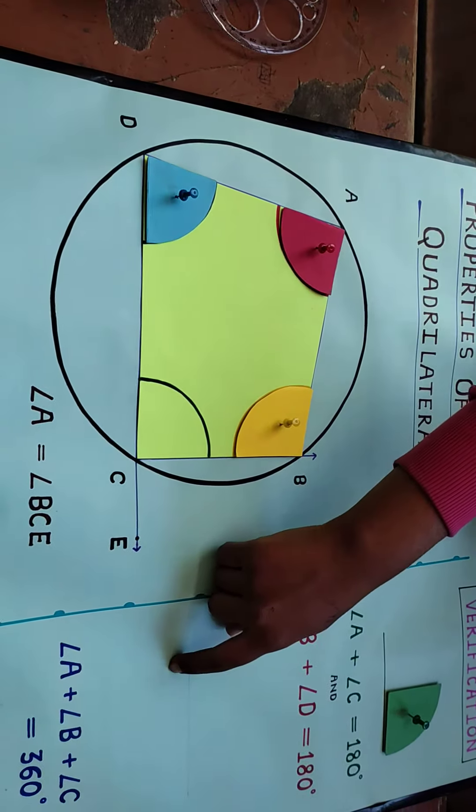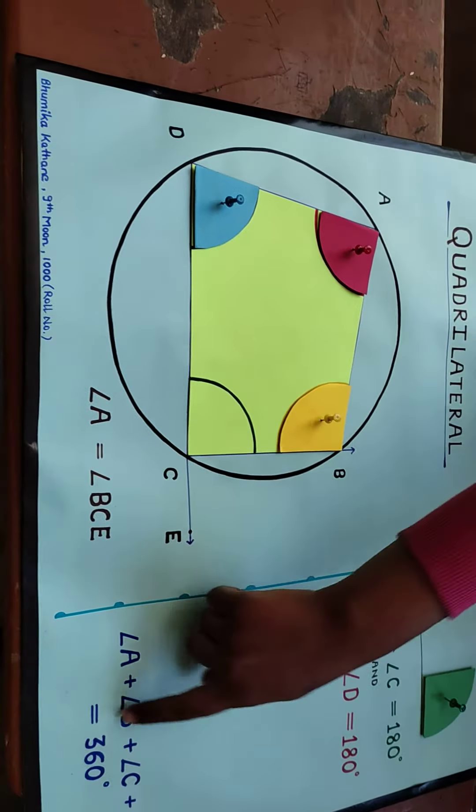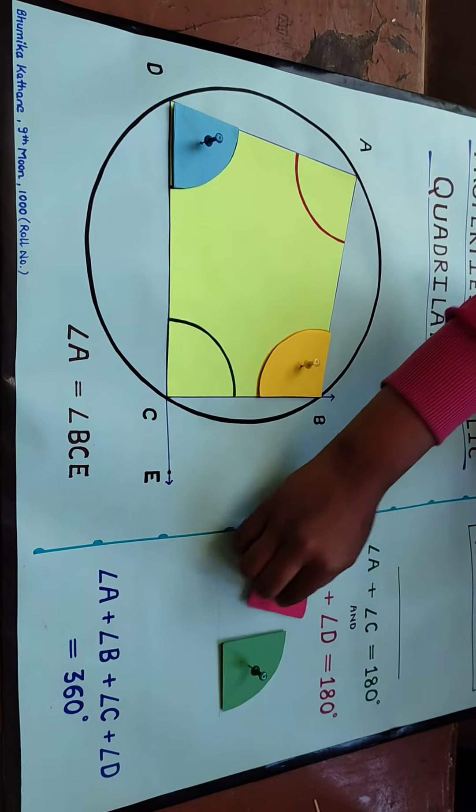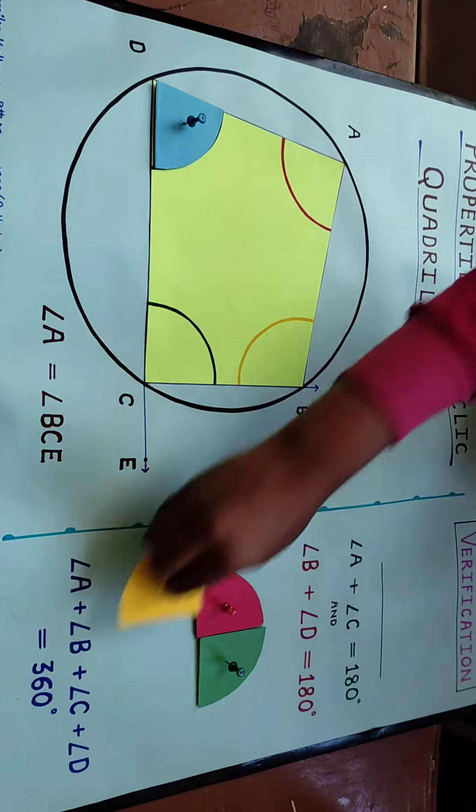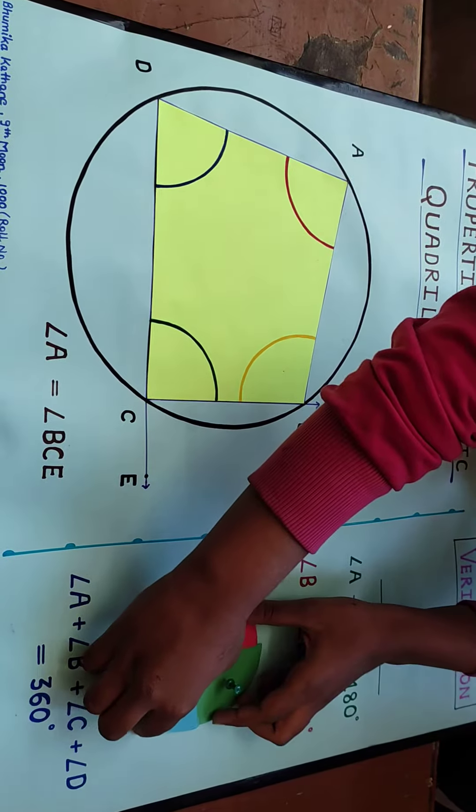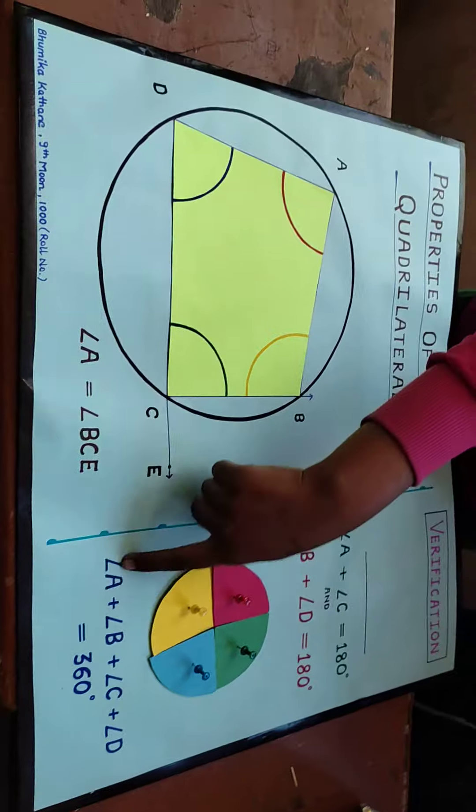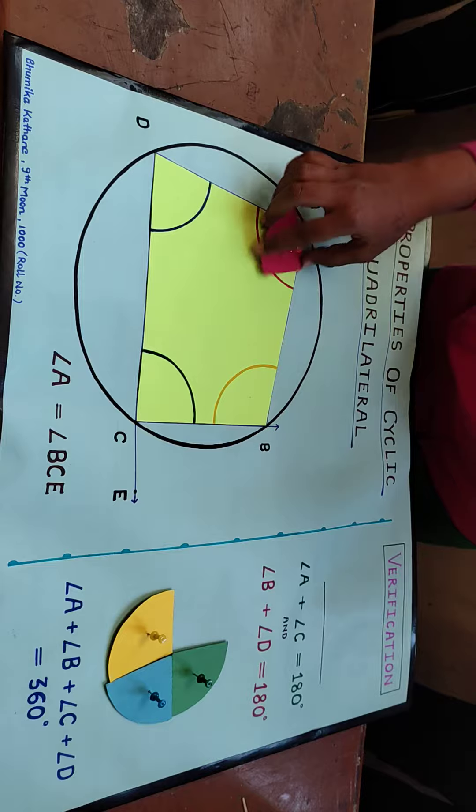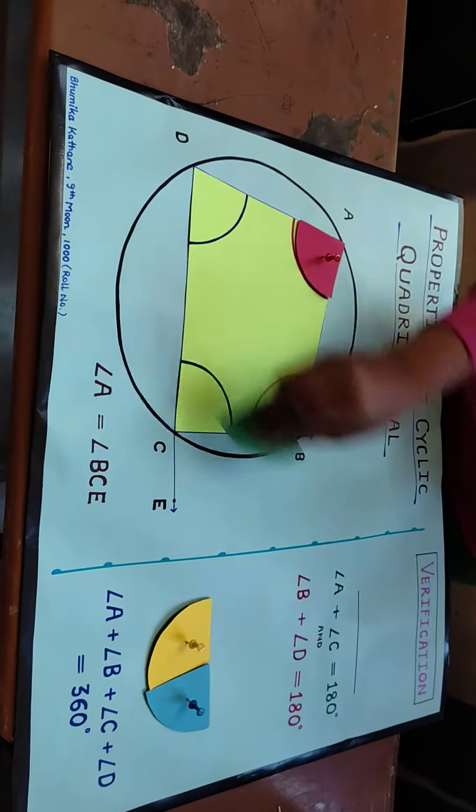the second property says that all the angles add up to 360 degrees. We are putting the replicas again. They form a complete circle, which means angle A plus B plus C plus D equals 360 degrees. Now I am placing back all the replicas.